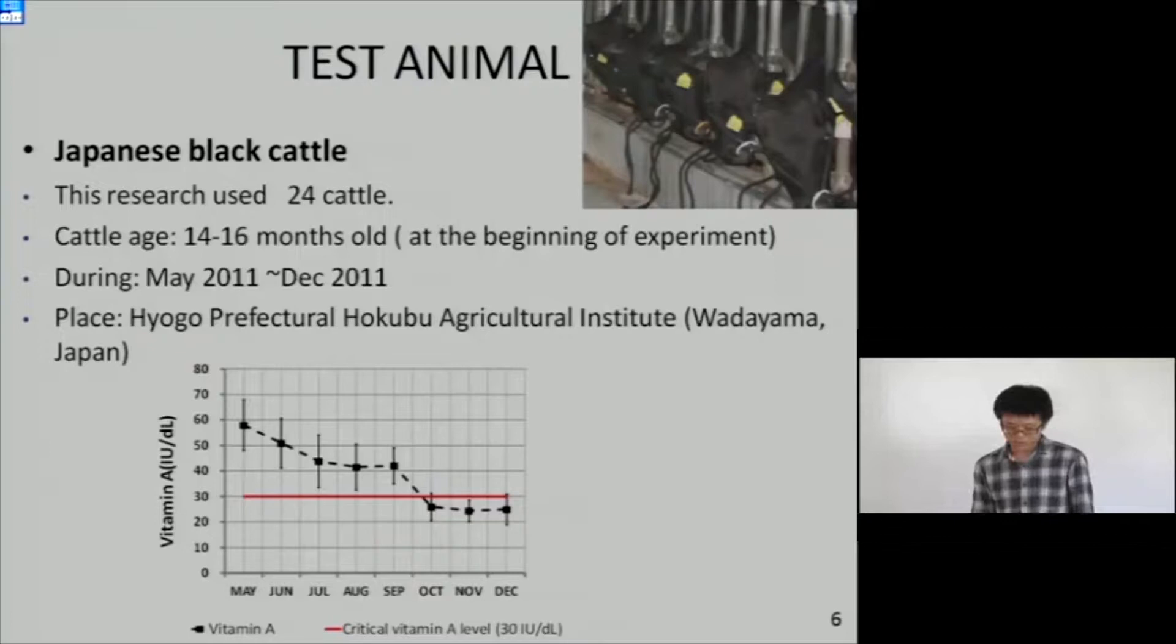The animals we used include 24 cattle in this presentation. The cattle's age was 14 to 16 months old at the beginning of the experiment. The period was from May 2011 to December at Hyogo Prefecture Hokubu Agricultural Institute. This graph shows the vitamin A change in the experimental period. It clearly shows that from May to December, the serum retinol level is decreasing.